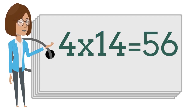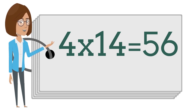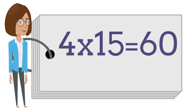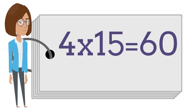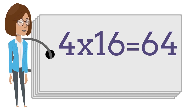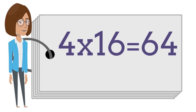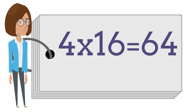4 times 14 is 56. 4 times 14 is 56. 4 times 15 is 60. 4 times 15 is 60. 4 times 16 is 64. 4 times 16 is 64.